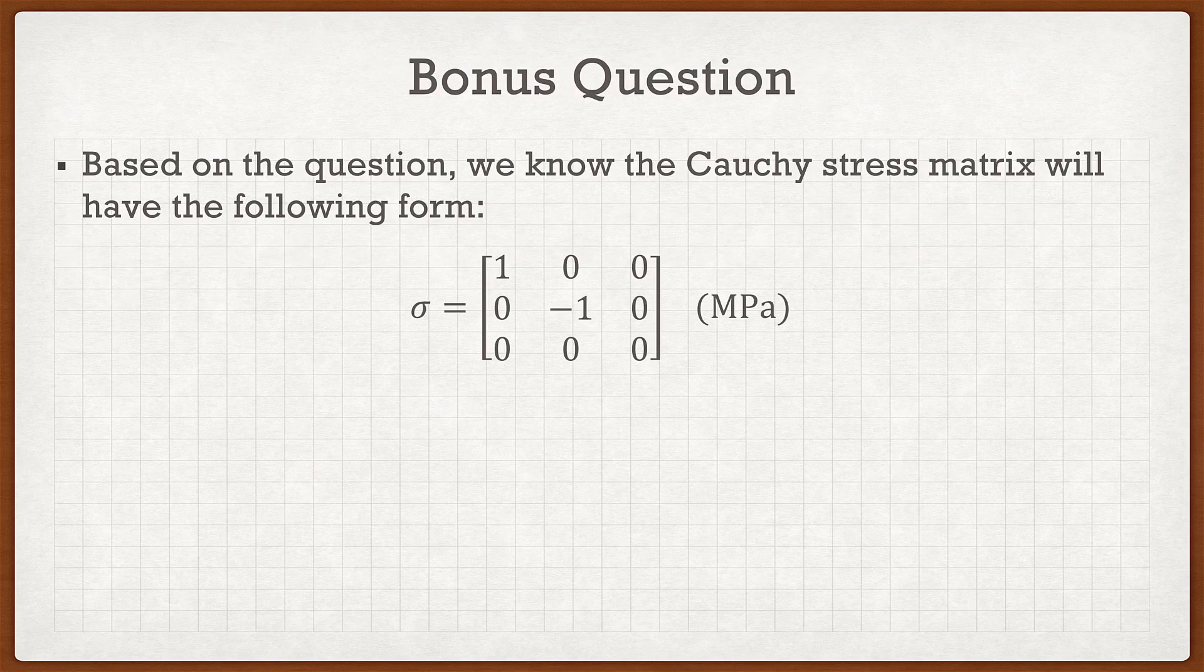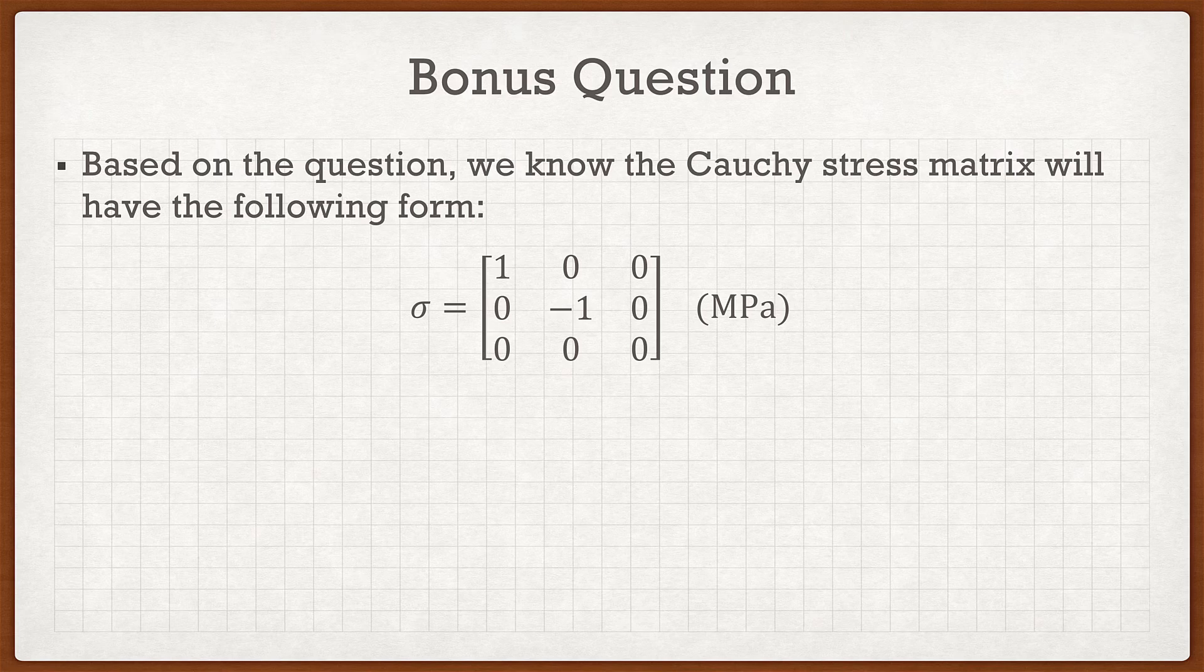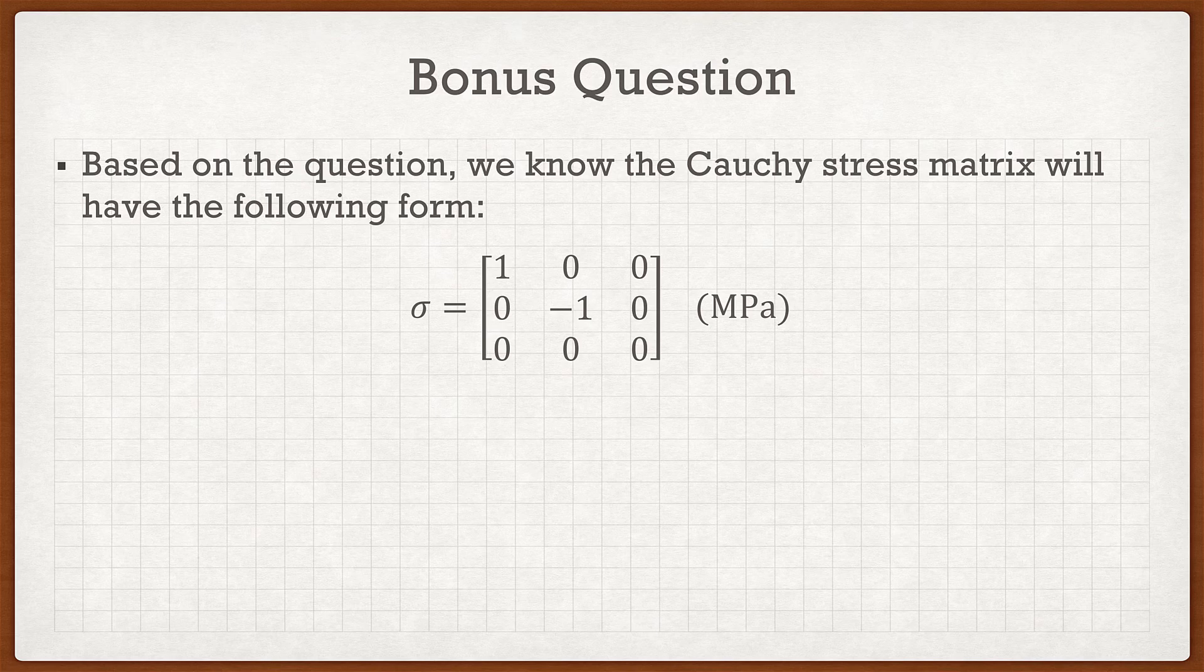Based on the question, we know that the Cauchy stress matrix will have the following form where σ₁₁ is 1, σ₂₂ is -1, and everything else is 0. This is just right from the question. Even though we weren't given the Cauchy stress tensor explicitly, we can easily figure out what it is.